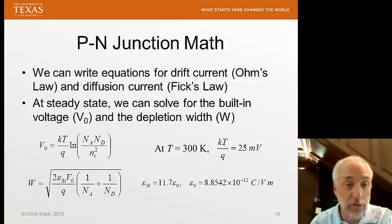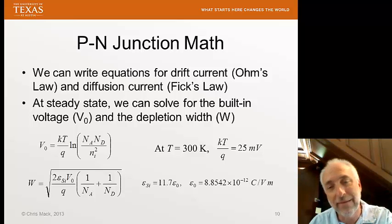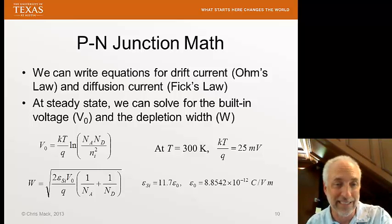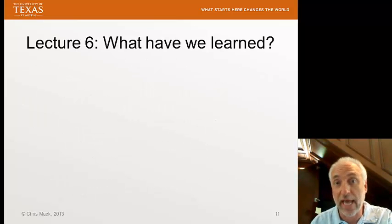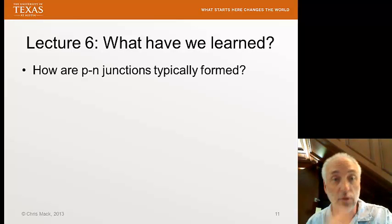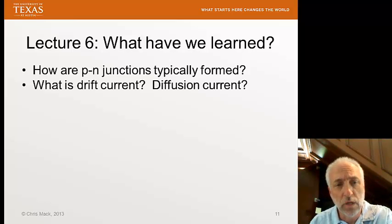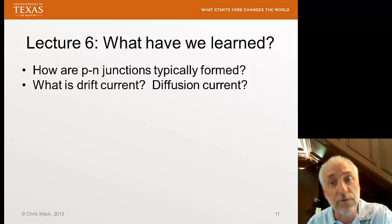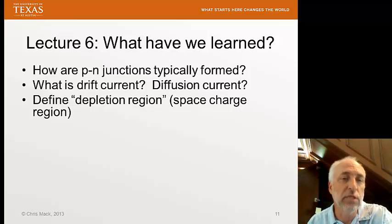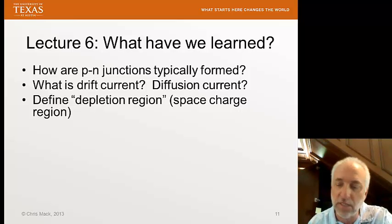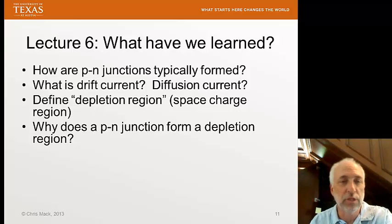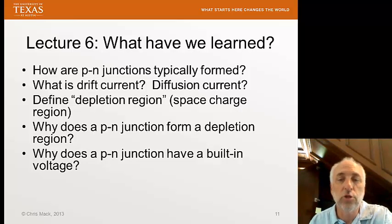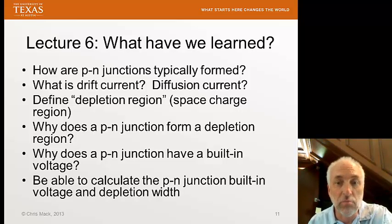We now know everything about a static P-N junction — we'll apply it in an electrical circuit next time. What we've learned so far: how to form a P-N junction in a typical way; what drift current and diffusion current mean; the definition of depletion region and space charge region and that they're interchangeable; why a P-N junction forms a depletion region and has a built-in voltage; and how to calculate both the built-in voltage and the depletion width using the equations from the previous slide.